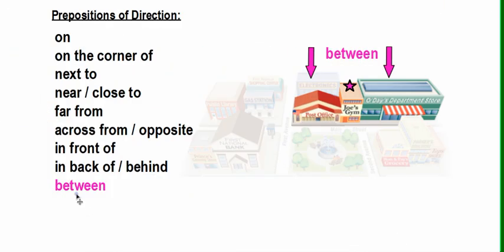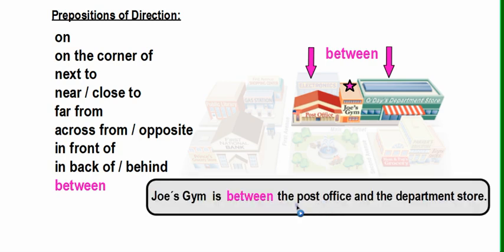The last preposition is 'between.' We use 'between' when we indicate there is something on one side and something on the other side of a place or an object. For example, Joe's Gym is between the post office and the department store. When we use 'between,' we need to indicate two things on the sides of an object.